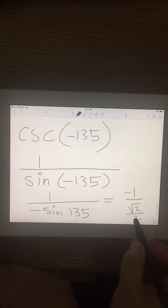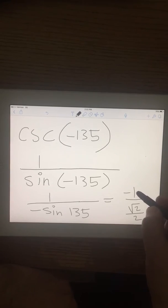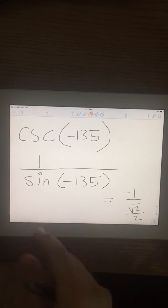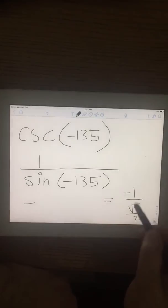Now next step, 2 can move up, so it's going to be negative 2 over root 2.